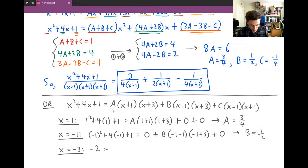When we plug in x = -3, the A and B terms both become 0 because they have (x+3) factors. For C, we get (-3-1)(-3+1) = (-4)(-2) = 8C. So solving -2 = 8C, we get C = -1/4.